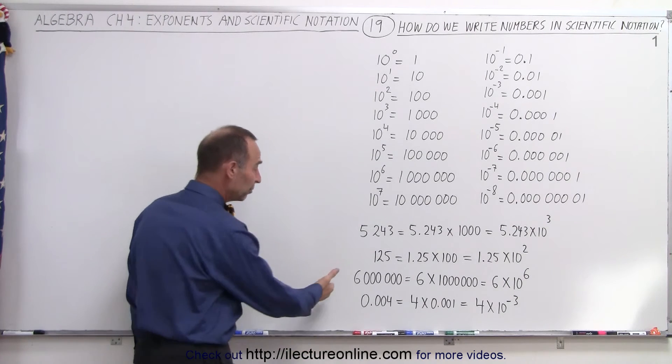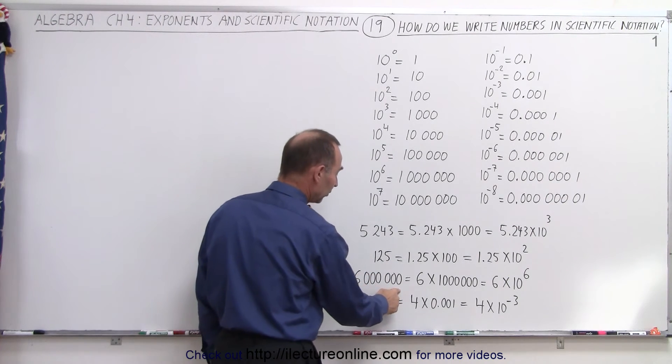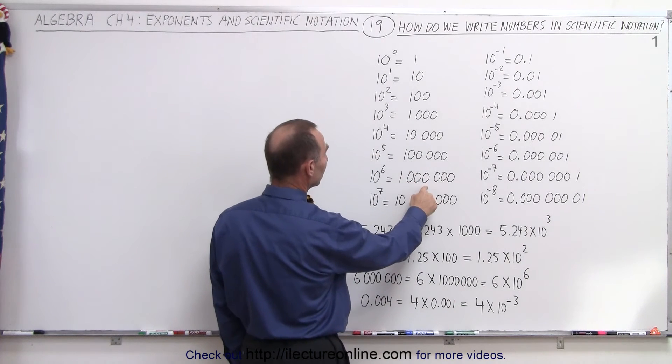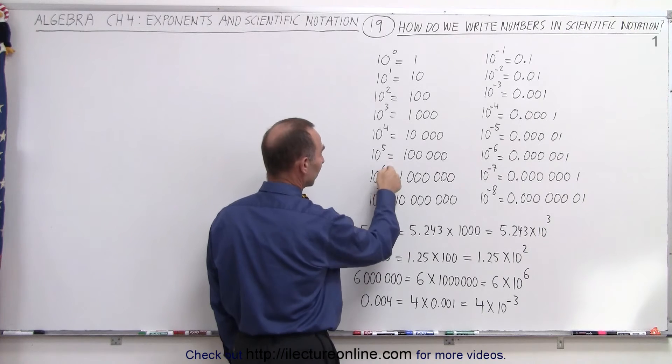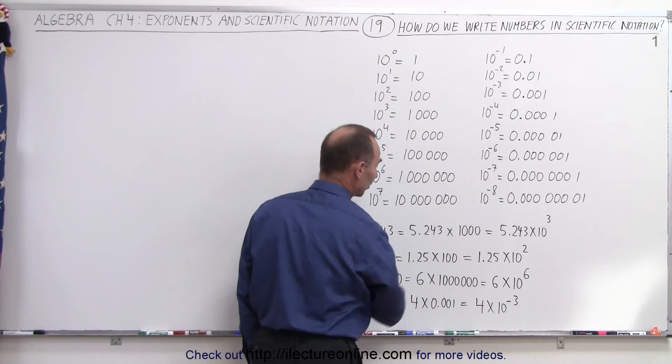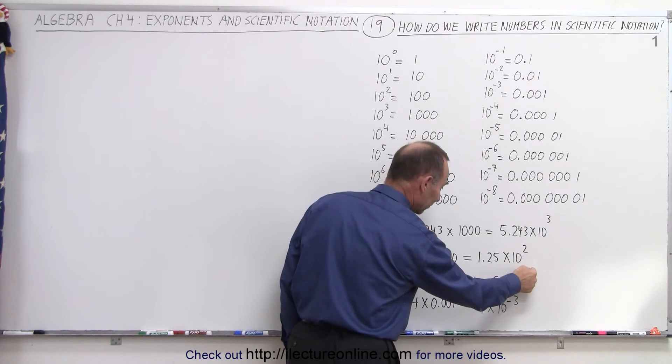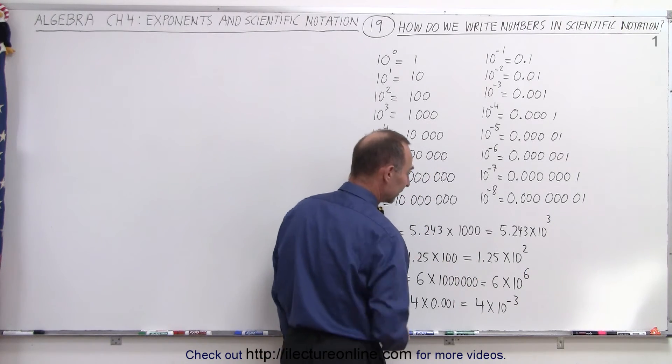The number 6,000,000, notice there's six zeros. So I can write 6,000,000 as 6 times 1,000,000. And 1,000,000 can be represented by 10 to the sixth power. The 6 again indicates the number of zeros. So I can write 6 times 10 to the sixth power instead of 6 times the million.